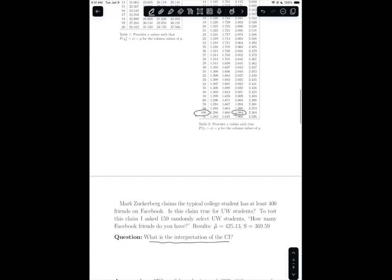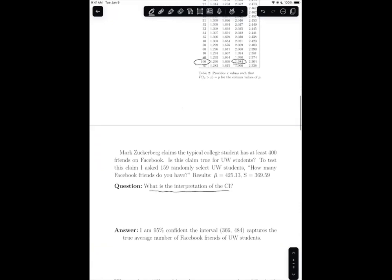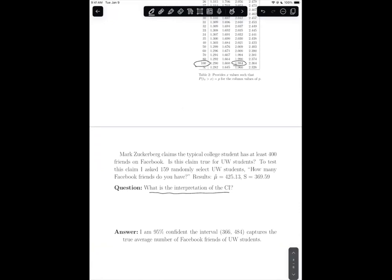And so we're going to talk about how we're 95% confident. So the interpretation is I am 95% confident the interval 366.484 captures the true average number of Facebook friends of UW students.